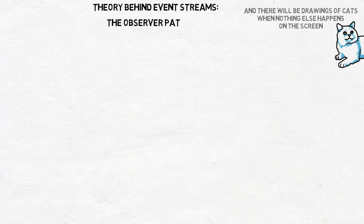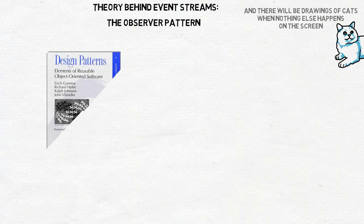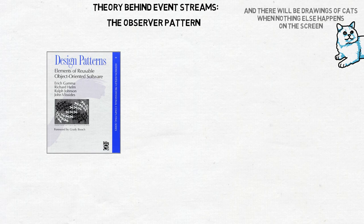Let's start with a bit of theory. Basically, we are talking here about the observer pattern. You can read all about it in this very old book, Design Patterns: Elements of Reusable Object-Oriented Software by the so-called Gang of Four. The idea behind this is to solve two problems.